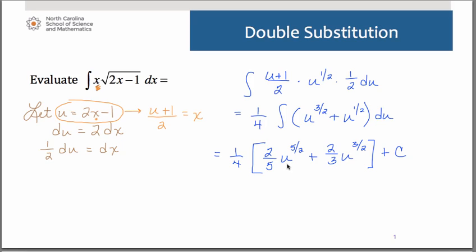And at the same time, we can substitute our 2x minus 1 back in place of our u's. Our final answer then is 1 tenth 2x minus 1 to the 5 halves plus 1 sixth 2x minus 1 to the 3 halves plus c.